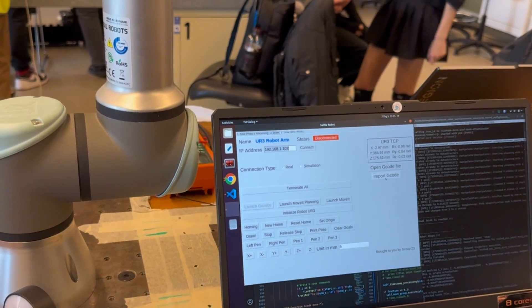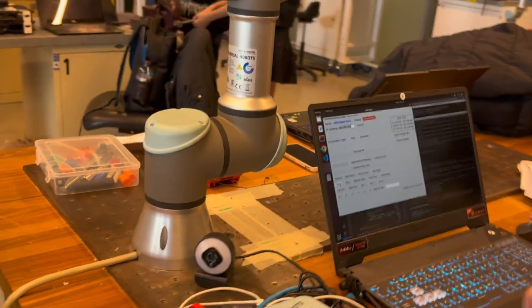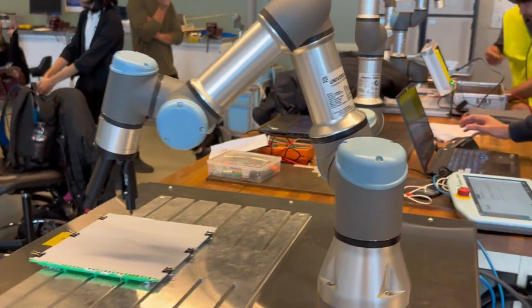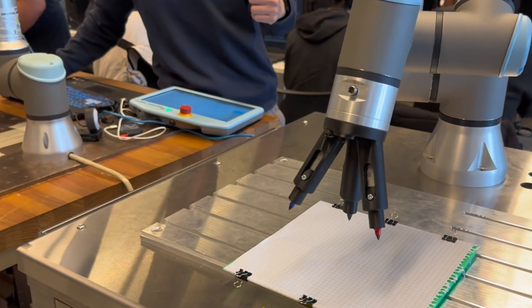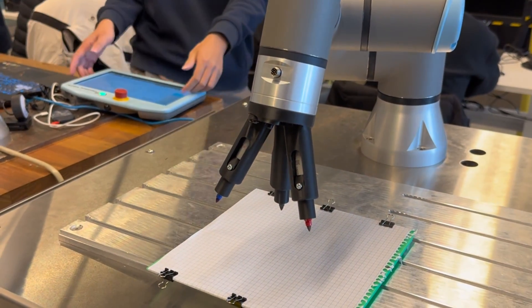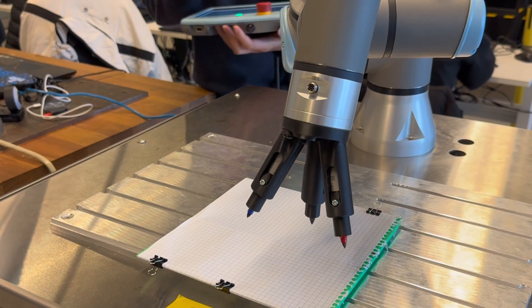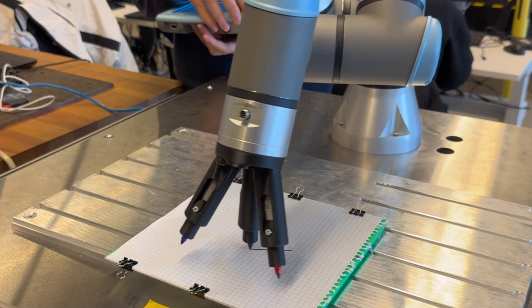And for the demonstration purpose, I will draw the triangle file which represents for the SVG file. And now we're good to go. Let's start drawing. Also, I need to hold the panel to prepare the emergency stop, just in case the robot moves wrong.